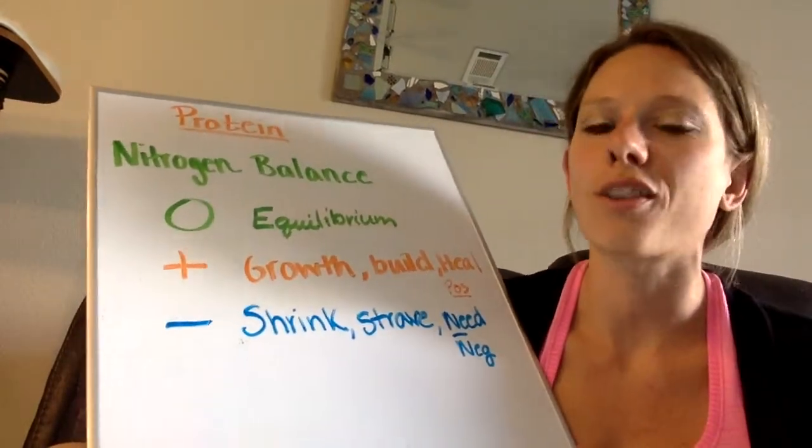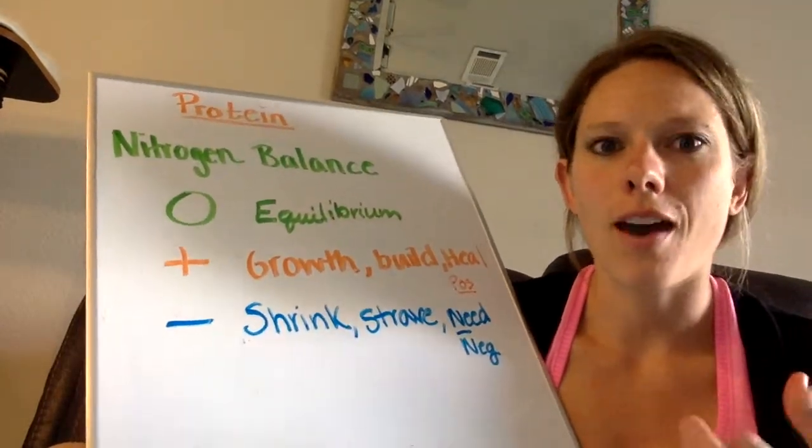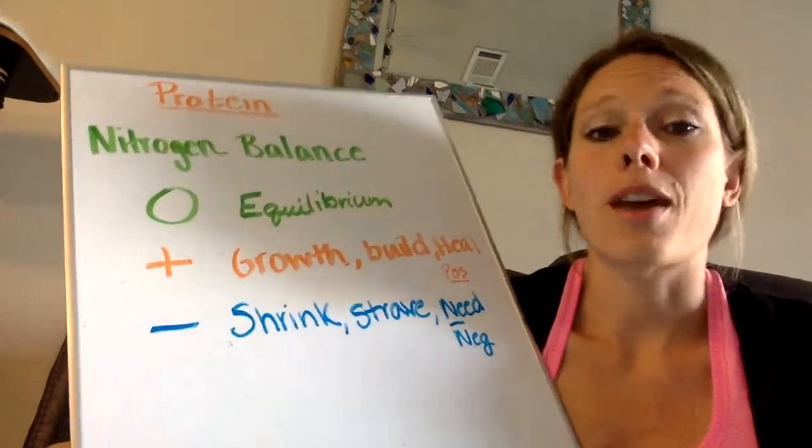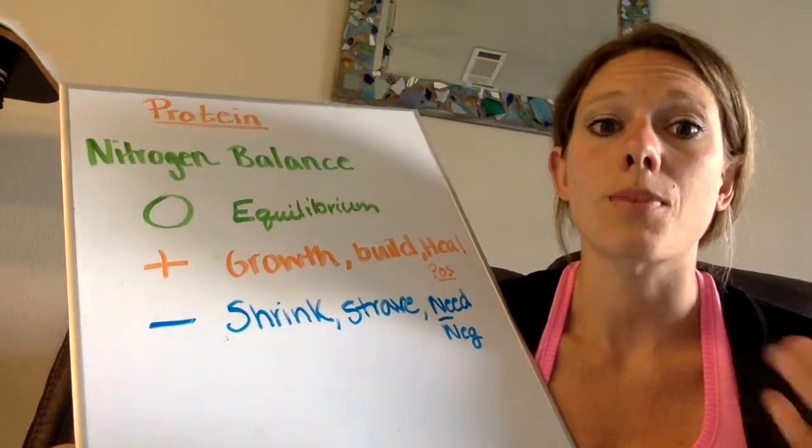Children, growing, teenagers, healing, we're getting better. So if you can kind of think of it in that way, things are getting better, they're getting more positive. And that might help with remembering what examples of nitrogen balance that's positive.